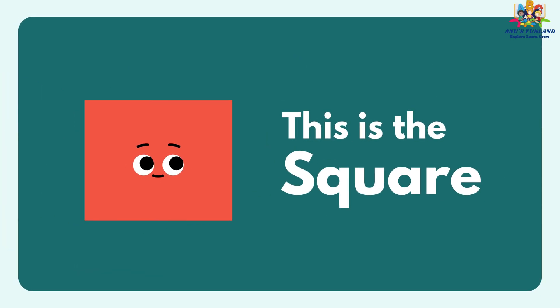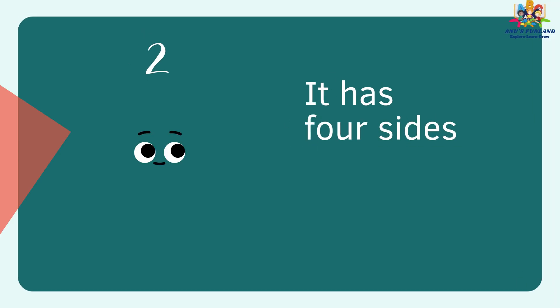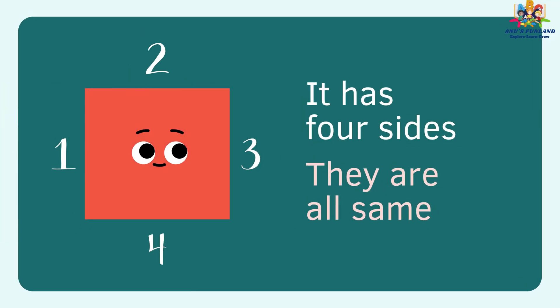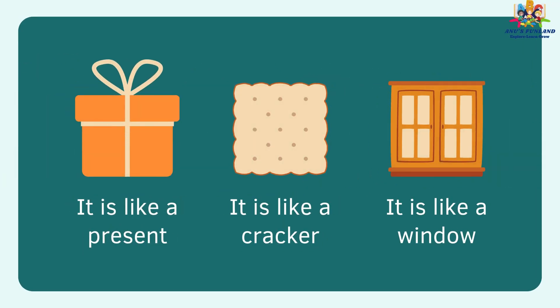This is a square. It has four sides. They are all the same. It is like a gift box. It is like a cookie.